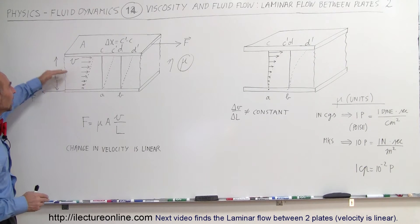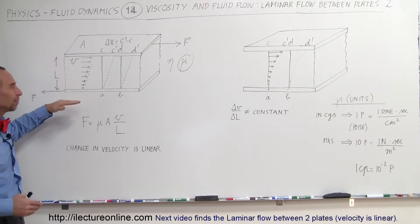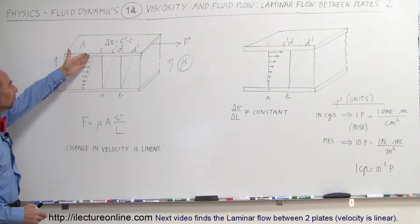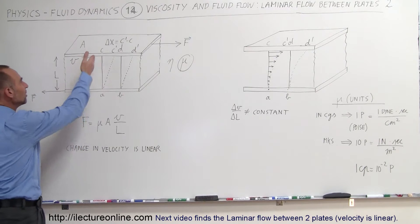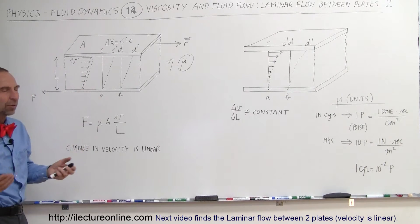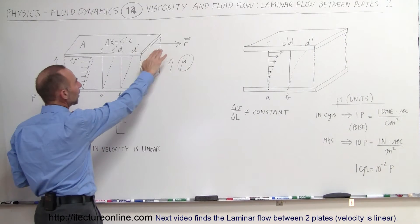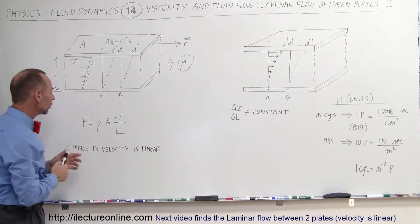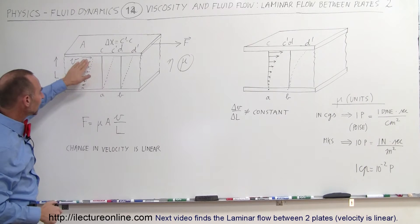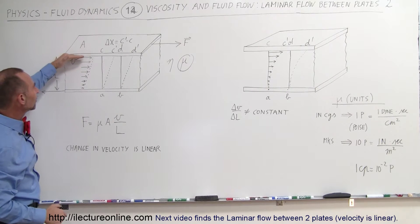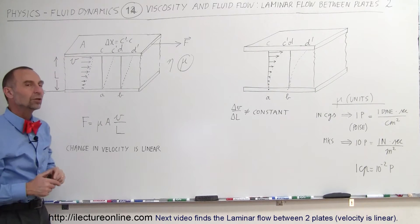In the previous example we saw that we have two plates, one plate being pulled to the right, the other plate typically being kept in place. We can see that the velocity of the fluid between the two plates will change and there's a linear change. Because of that we can write that the force required to move the top plate at a constant velocity is equal to the coefficient of viscosity mu times the area of the plate times the velocity divided by the depth or height of the fluid between the two plates.